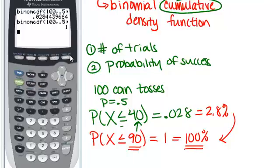So that's how you can use the binomial cumulative density function button in your calculator to answer the sort of questions where you're trying to figure out what's the probability of at most some given number of successes.